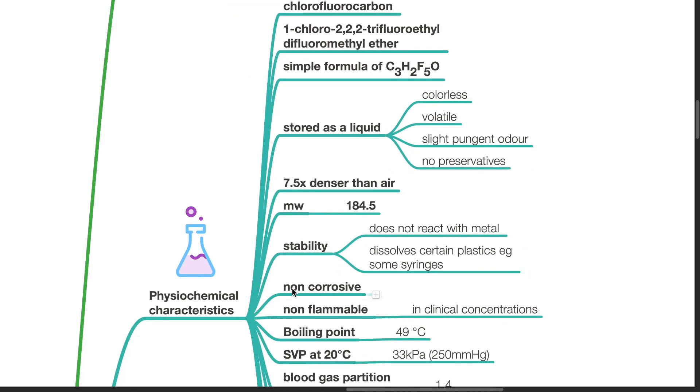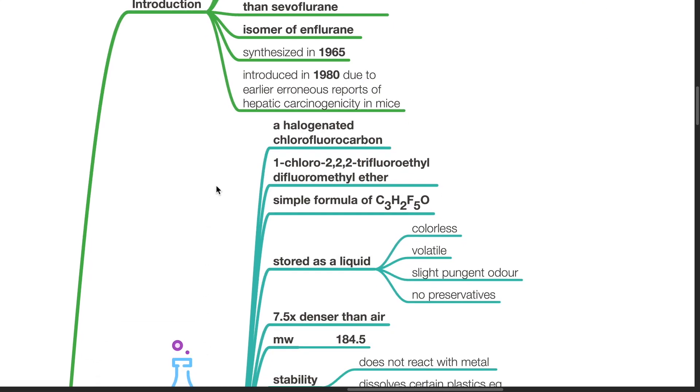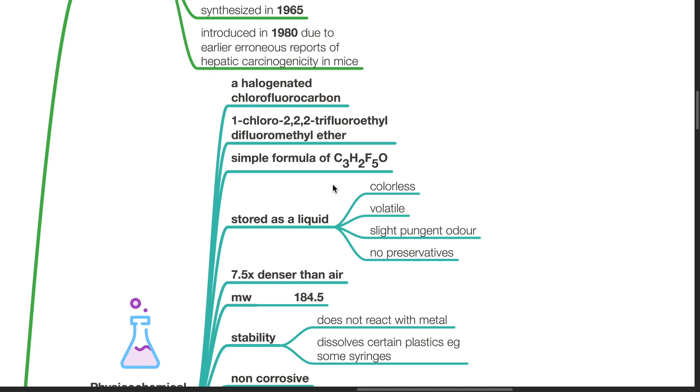Physical chemical characteristics. Isoflurane is a halogenated chlorofluorocarbon with a chemical name of 1-chloro-2,2,2-trifluoroethyl difluoromethyl ether, simple formula of C3H2F5O. It is stored as a liquid, colorless, volatile, has a slight pungent odor, and is stored without preservatives.